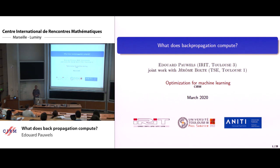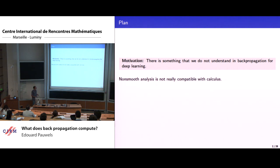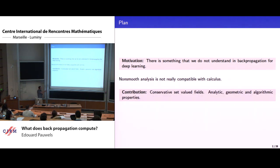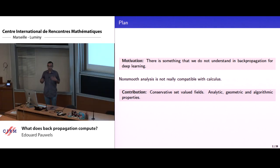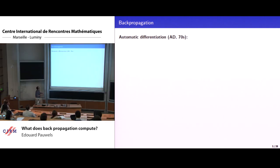So first, why is there anything we need to understand about backpropagation? What is the problem with it? It's a mature technology, implemented in many software packages. The main idea is that we don't really have calculus for non-smooth objects. I will first highlight this issue and then introduce a notion of conservativity which catches some of the problems we have here.